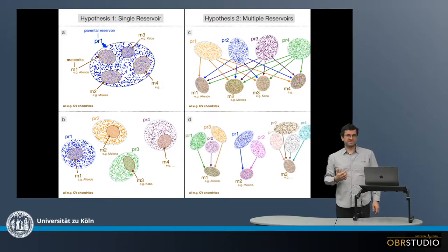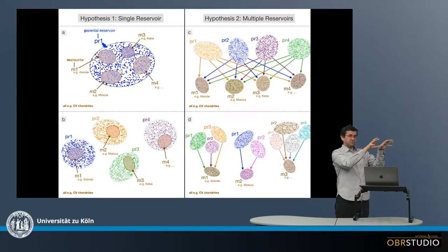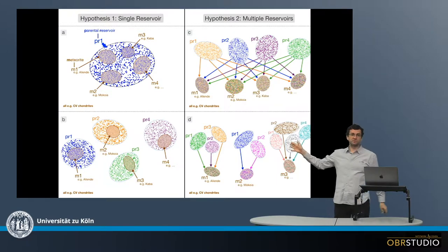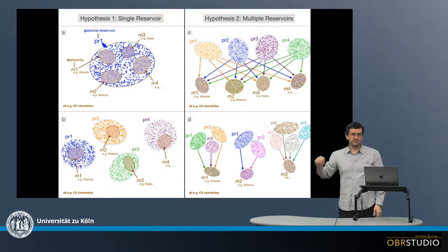And then finally, there might be three reservoirs, but the chondrules from these reservoirs only mix into Kaba. Then another three or four or five, doesn't matter, reservoirs, and the chondrules from these only form Kaba, and then another couple of reservoirs only forming Allende. So this would be the last case down here.